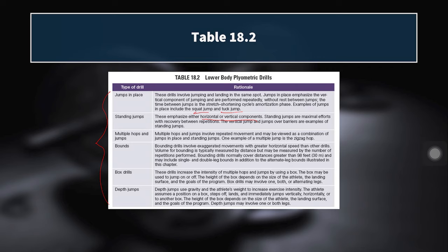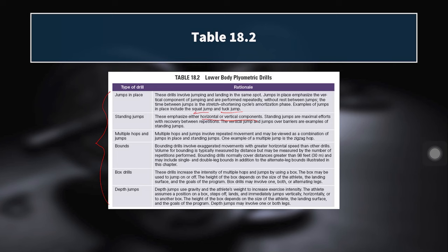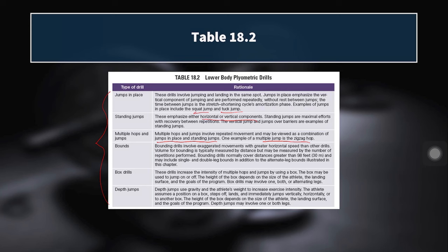Standing jumps emphasize either horizontal or vertical components — for example, a standing broad jump or a standing vertical jump. These are maximal efforts with full recovery between repetitions, resting maybe 30 seconds to a minute between attempts. Then we have multiple hops and jumps, which involve repeated movement and can be viewed as a combination of jumps in place and standing jumps. One example is the zigzag hop — zigzagging diagonally back and forth over a barrier or line. These three categories overlap somewhat, but the delineations are helpful for categorization.